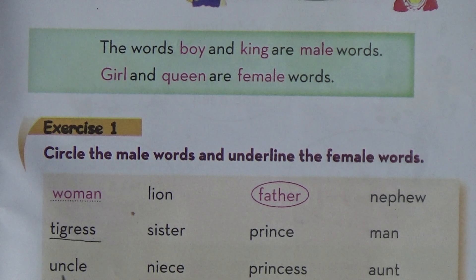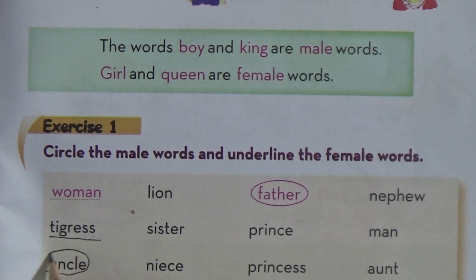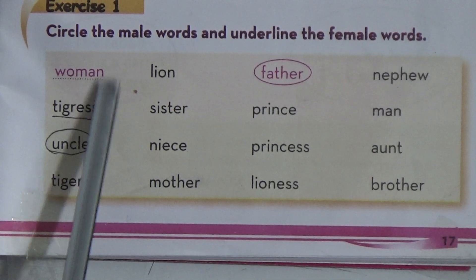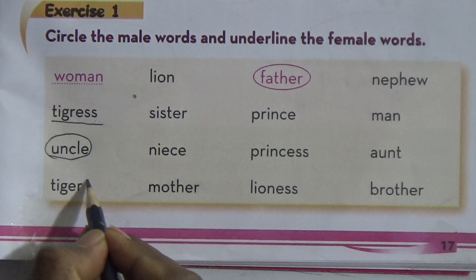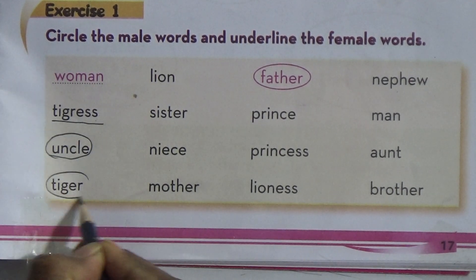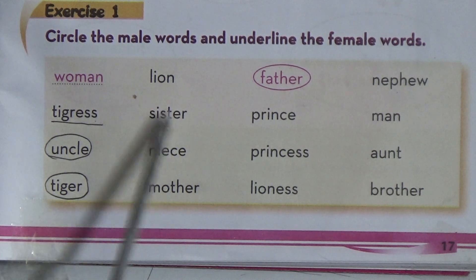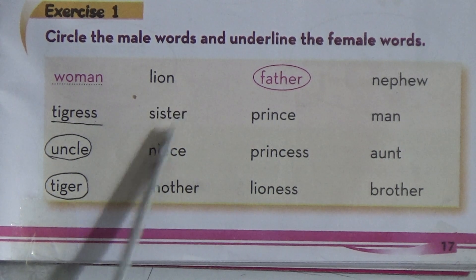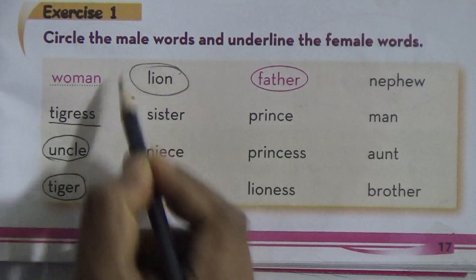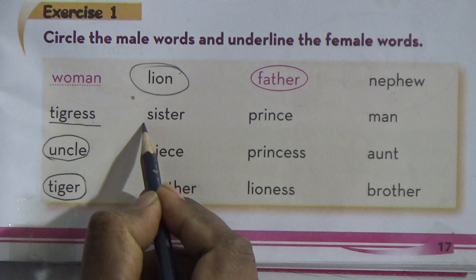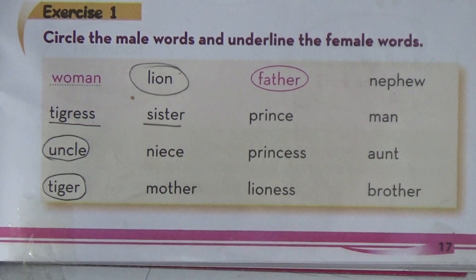Uncle — is uncle female or male? Uncle is male, so uncle would be circled. Tiger is also male, so it would also be circled. Then lion — lion would also be circled. Sister is female, so it would be underlined.